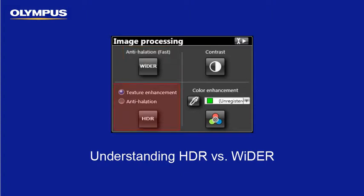HDR is an acronym for High Dynamic Range and has two modes of operation. As with Wider, HDR Anti-Helation mode is used to suppress glare. Additionally, this mode provides a higher level of contrast enhancement as compared to Wider. HDR Texture Enhancement mode also provides subtle texture enhancement. To achieve this, a series of images are automatically acquired at varying exposure times where only the optimally exposed pixels are used to construct the final image. Because multiple images are acquired, refresh rate in Live mode is compromised as compared to Wider.